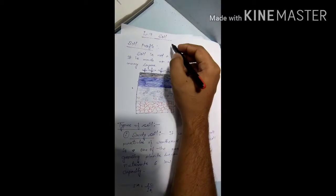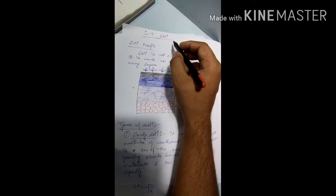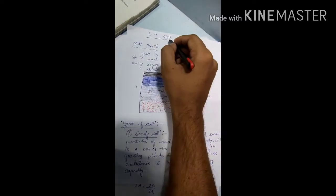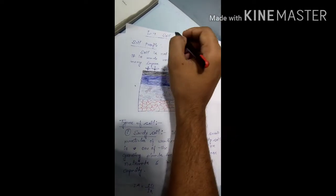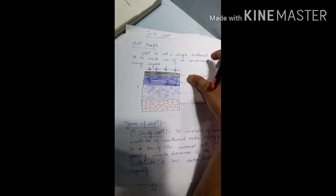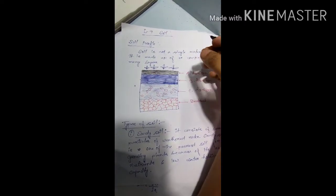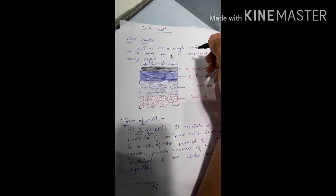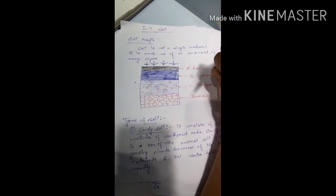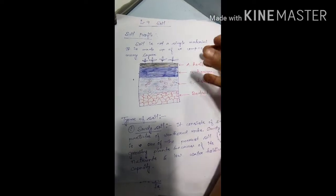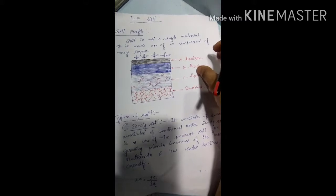Hello students. We have already completed one class in this chapter — Lesson 9, that is Soil. This is our second class. In the first class, we only discussed a brief description of soil: what is soil and a little about soil profile. So in this class we'll be discussing a little deeper about soil profile.